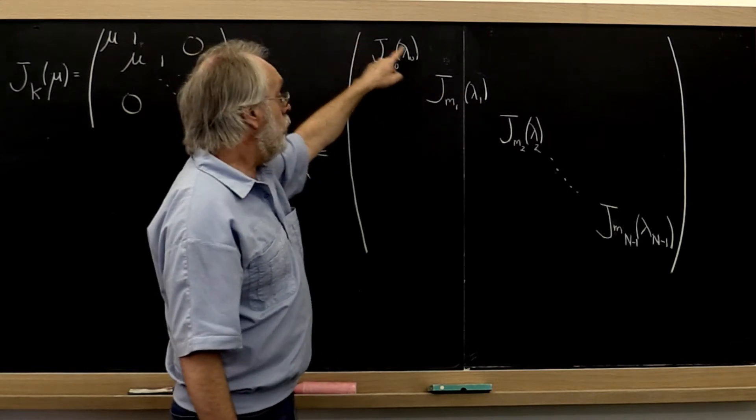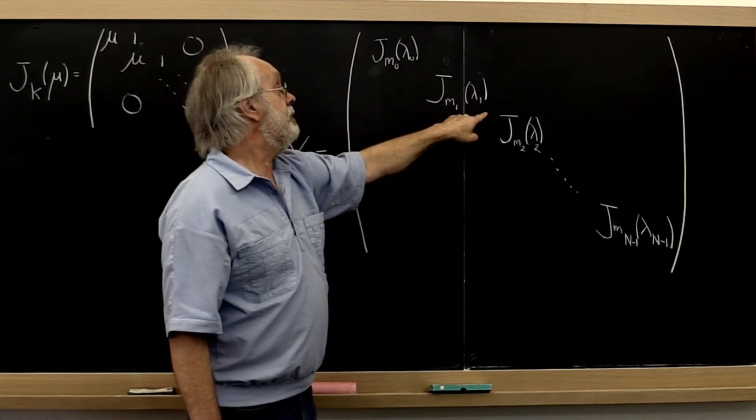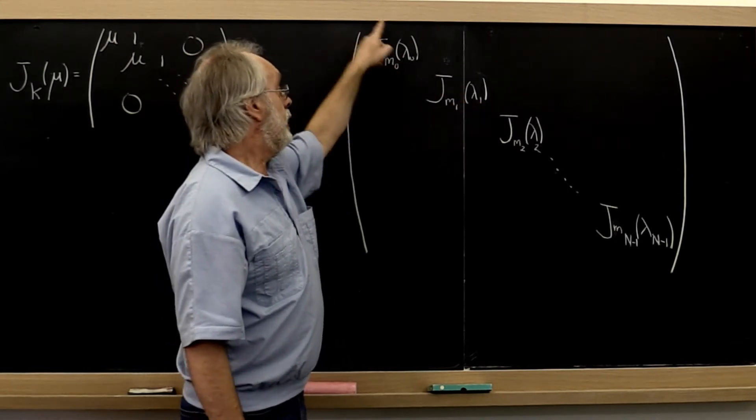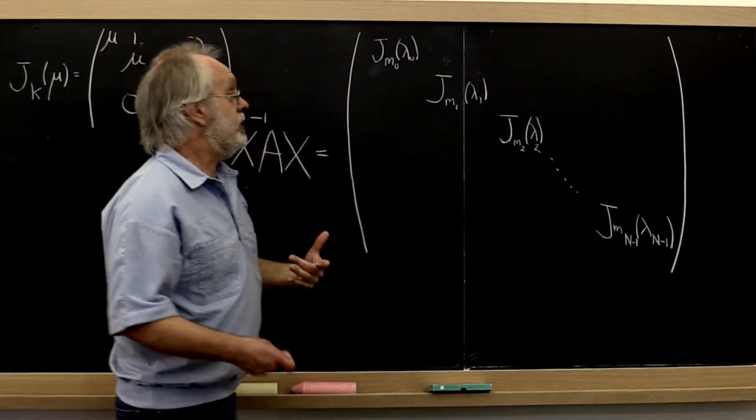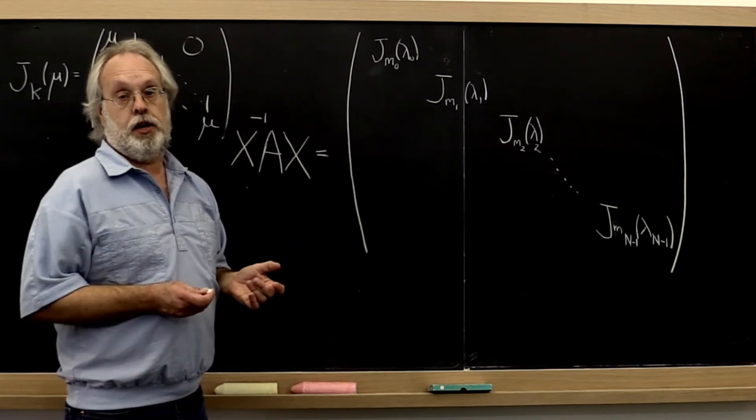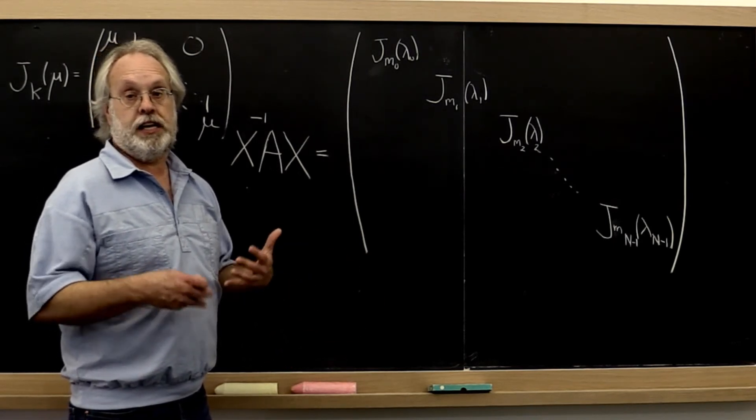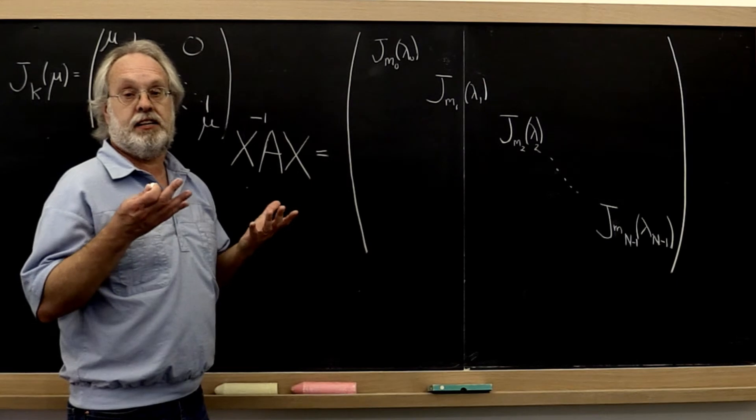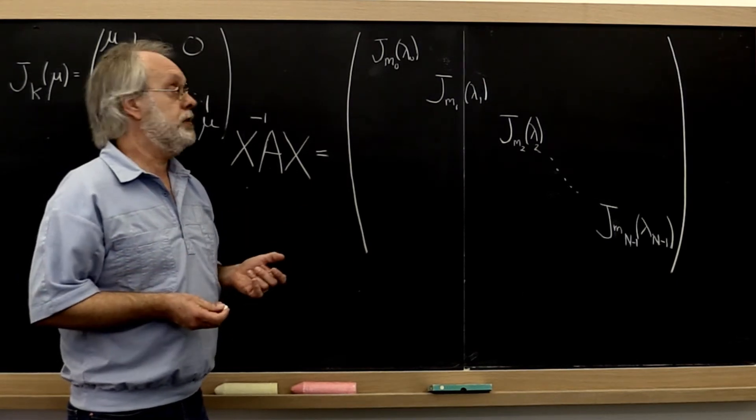The total number of times that an eigenvalue appears along the diagonal of this matrix is the algebraic multiplicity of that eigenvalue. It's the multiplicity that that eigenvalue is a root of the determinant.